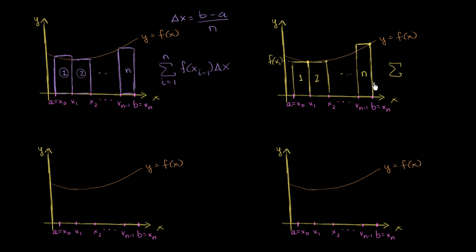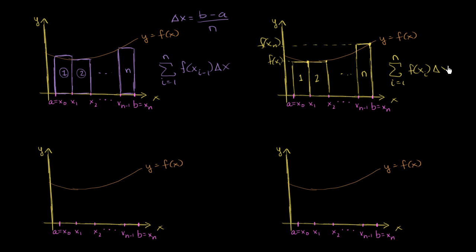We're still trying to approximate the area under the curve. The sum runs from i equals 1 to n. The height of the first rectangle is f of x₁, and the height of the nth rectangle is f of x sub n. So the height of the i-th rectangle is f of x sub i — whatever the rectangle number is, we evaluate the function there, and multiply by delta x. The difference from before: for the left boundary we used x sub i minus 1; here with the right boundary we use x sub i.